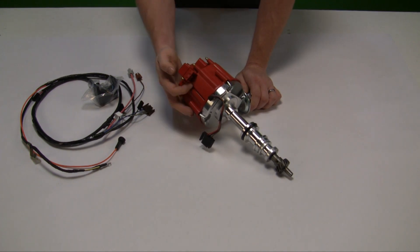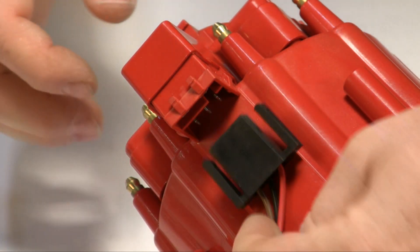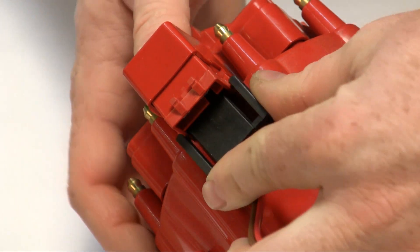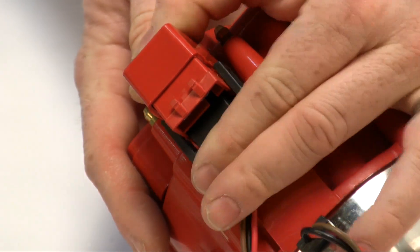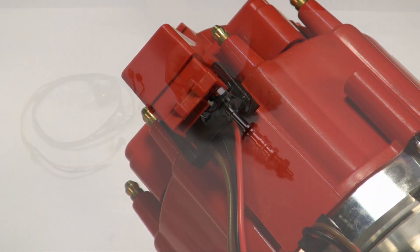There are three connections underneath the distributor cap. The first connection is the wire from the base of the distributor that plugs into the distributor cap. There are two locking tabs on the side that clip it in.